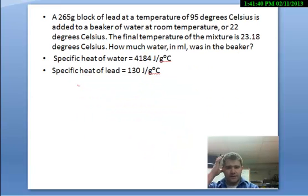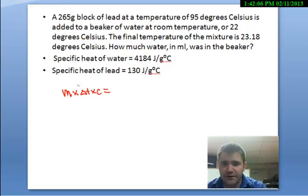Alright, last question. And this one is actually going to involve two different substances with two different specific heats. So we have a 265 gram block of lead at a temperature of 95 degrees Celsius added to a beaker of room temperature water at 22 degrees Celsius. The final temperature of the mixture is 23.18 degrees Celsius. How much water in milliliters was in the beaker. So now I have to use my full equation because I have two substances with different specific heats. And I have to plug all this stuff in. So we're going to call this the metal side and this the water side.